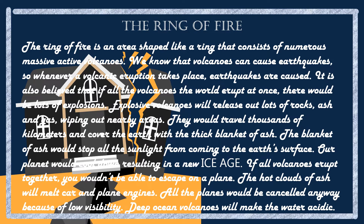It is also believed that if all the volcanoes — big and small — erupted at once, there would be enormous explosions. Explosive volcanoes would release lots of rocks, ash, and gas, blanketing nearby areas. These would travel thousands of kilometers and cover the earth with a thick blanket of ash — no sunlight, not even one ray. That is exactly what happened when an asteroid hit the earth during the dinosaur era, causing that thick ash blanket which stopped sunlight and contributed to how the dinosaurs died.